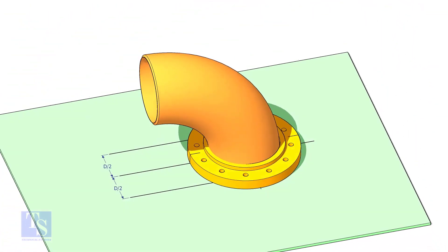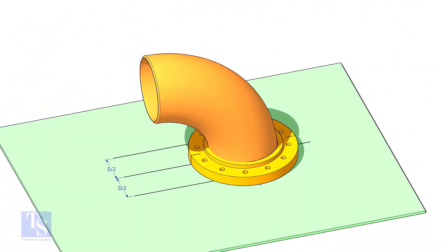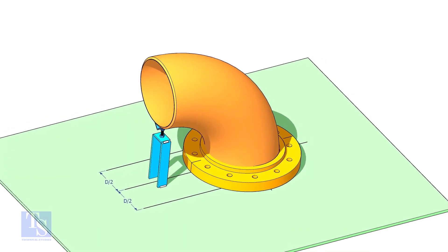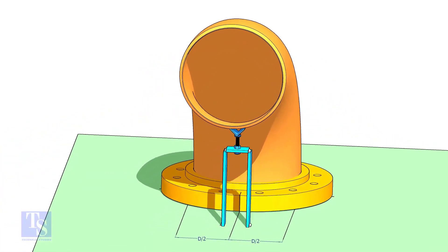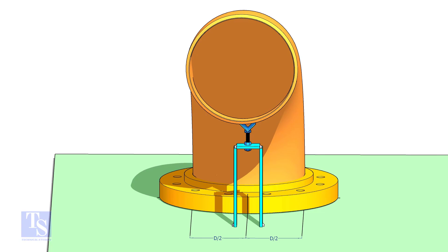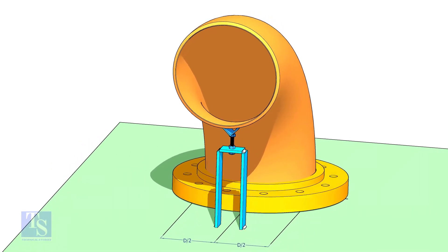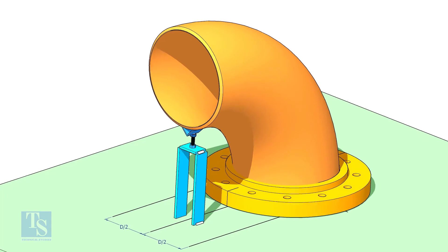Put the elbow in the flange. If required, tack weld the screw jack below the elbow face as shown. Adjust the height of the bolt and level the face of the reducer.